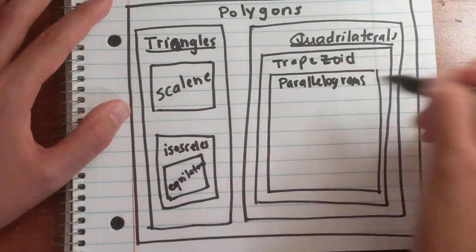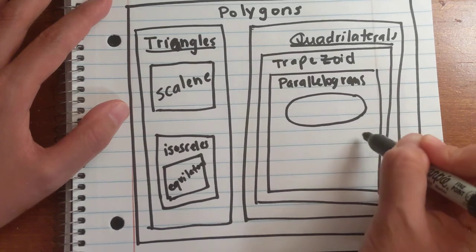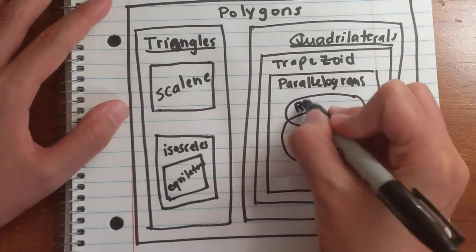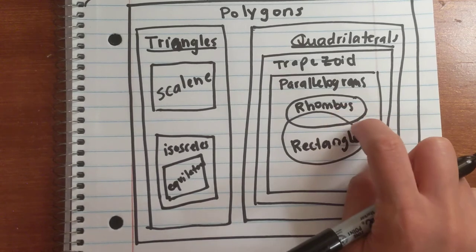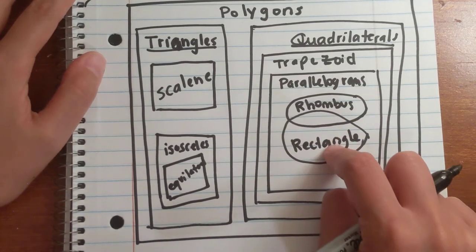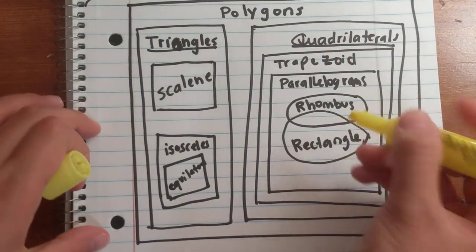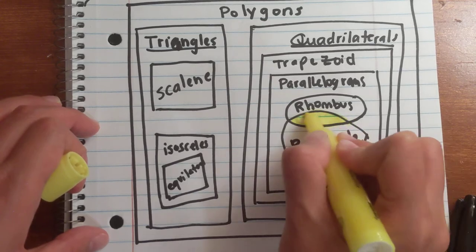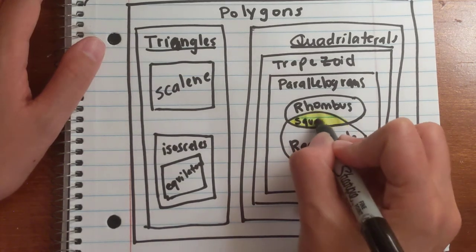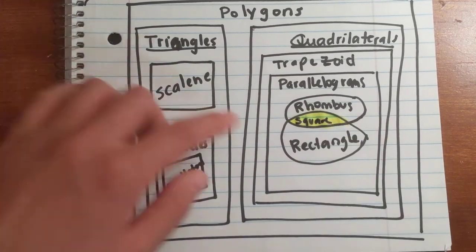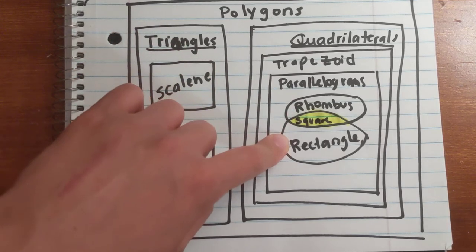Getting even more specific, I'm going to make a Venn diagram inside here, because it's important to see that there are two separate categories: rhombus and rectangle. A rhombus has four sides that are equal. A rectangle has four angles that are equal — 90 degrees. The overlapping part of the Venn diagram is the square. If I combine the attributes of a rectangle and a rhombus, I get a square. A square has four sides that are equal (rhombus) and four right angles (rectangle).